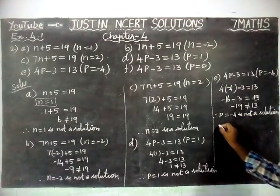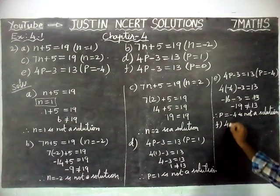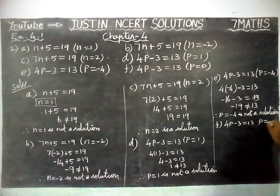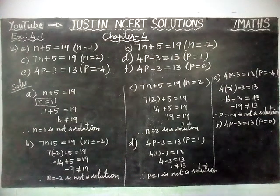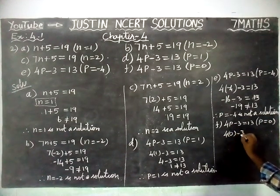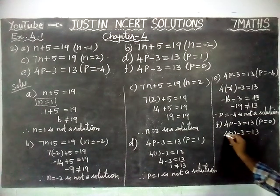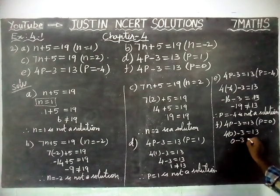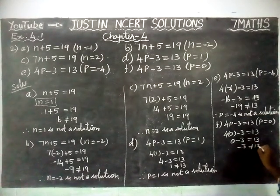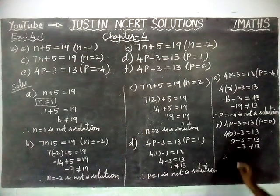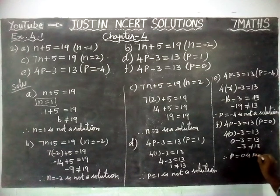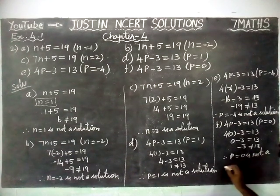Next, the last question, option F: 4P minus 3 is equal to 13, where P is equal to 0. Substituting: 4 into 0 minus 3 is equal to 13. 4 into 0 is 0, minus 3 is equal to minus 3. Minus 3 is not equal to 13. Therefore, P equal to 0 is not a solution for the given equation.